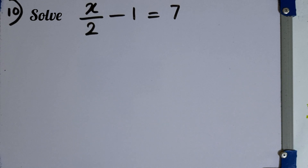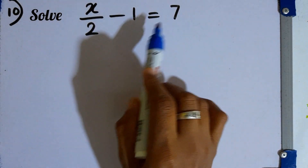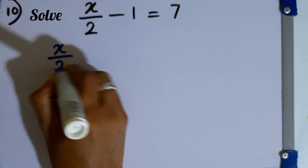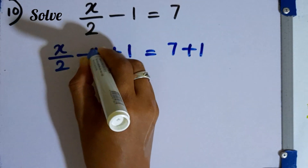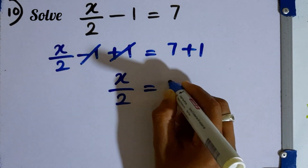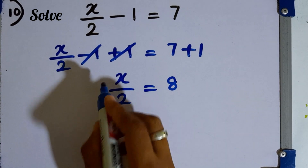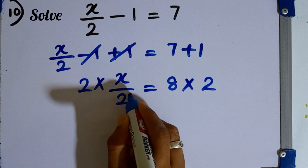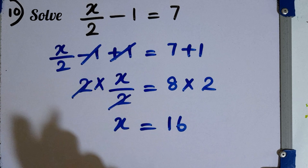Question number 10. Solve x over 2 minus 1 equals 7. First, add 1 to both sides to remove minus 1: x over 2 equals 7 plus 1, which is 8. Since x is divided by 2, multiply both sides by 2. The 2s cancel, giving x equals 16. That is the final answer.